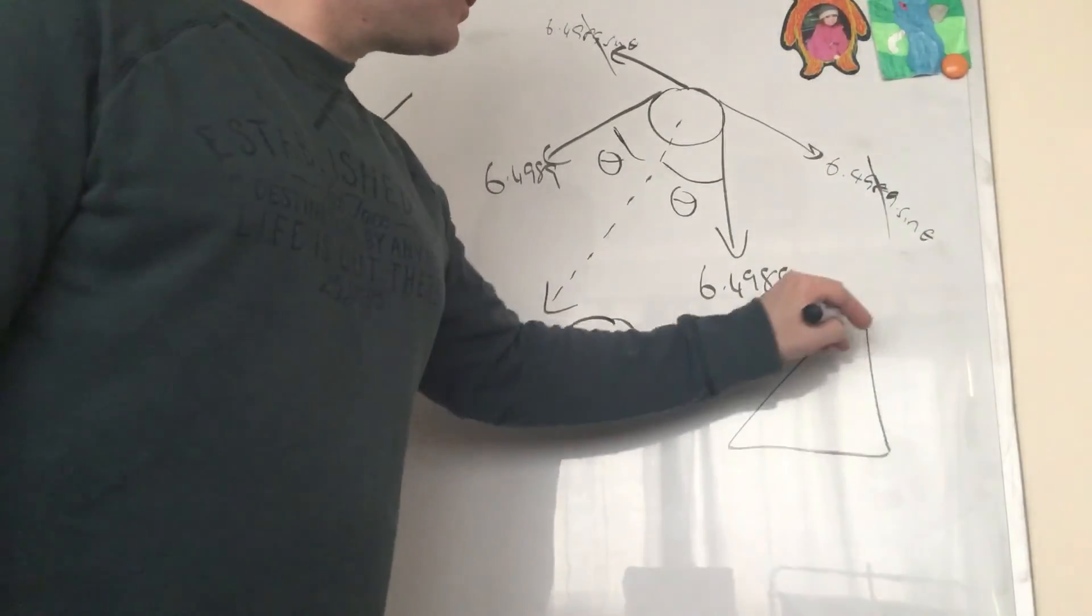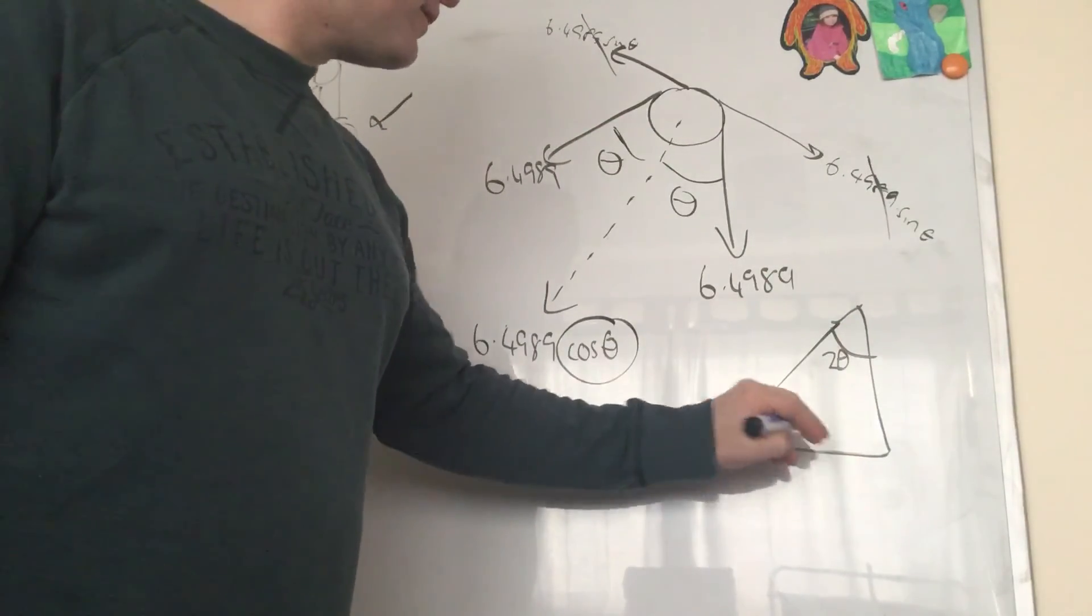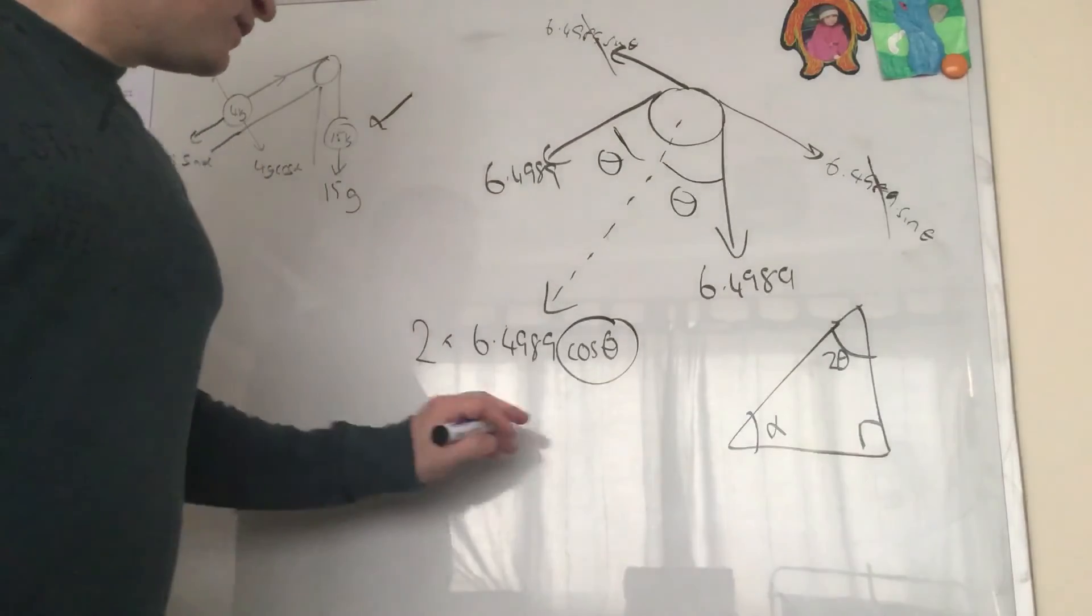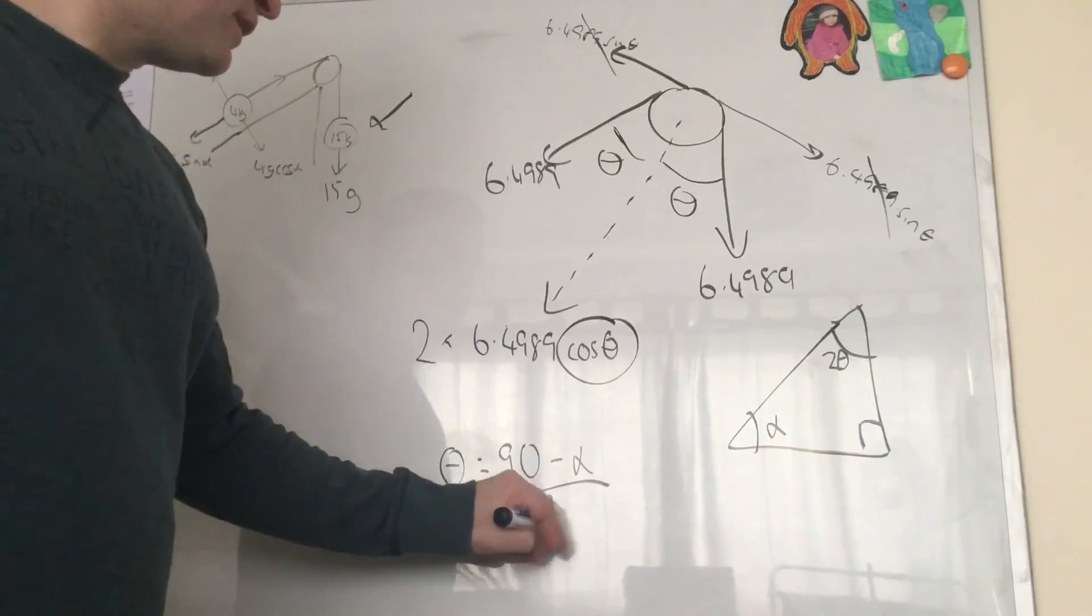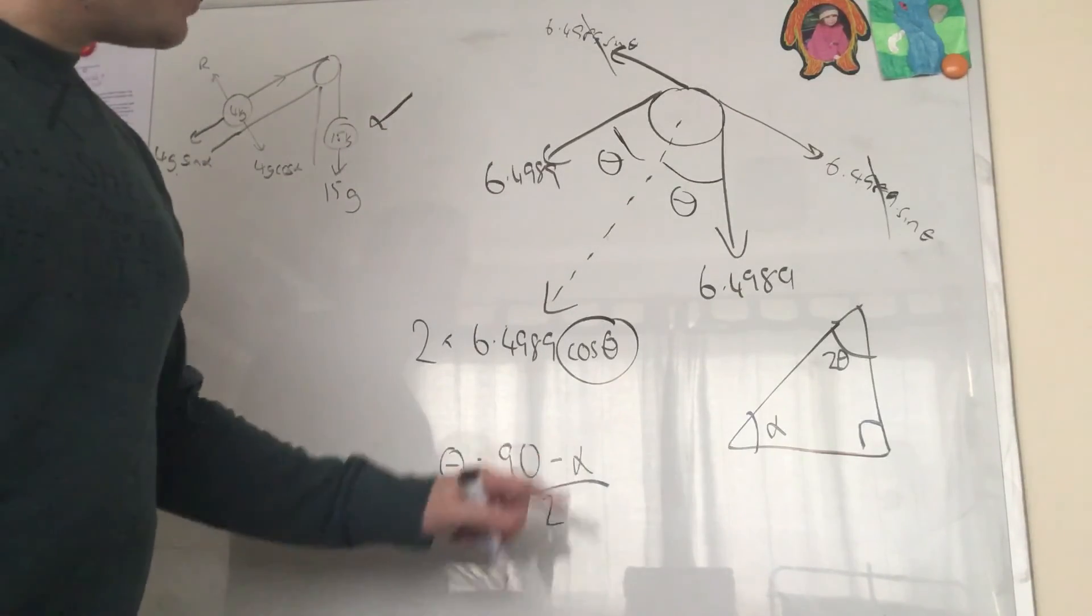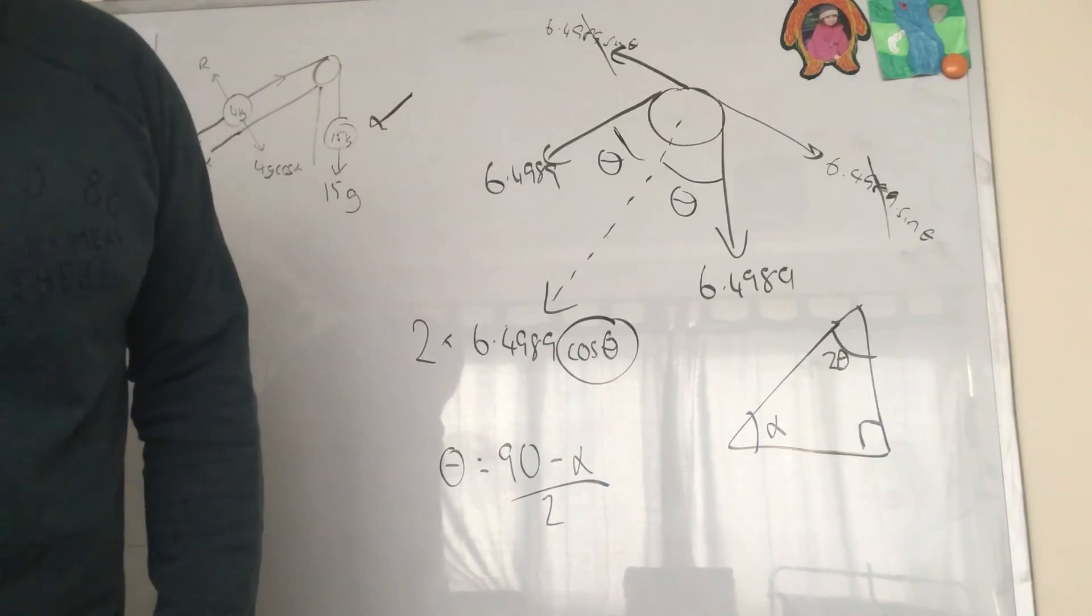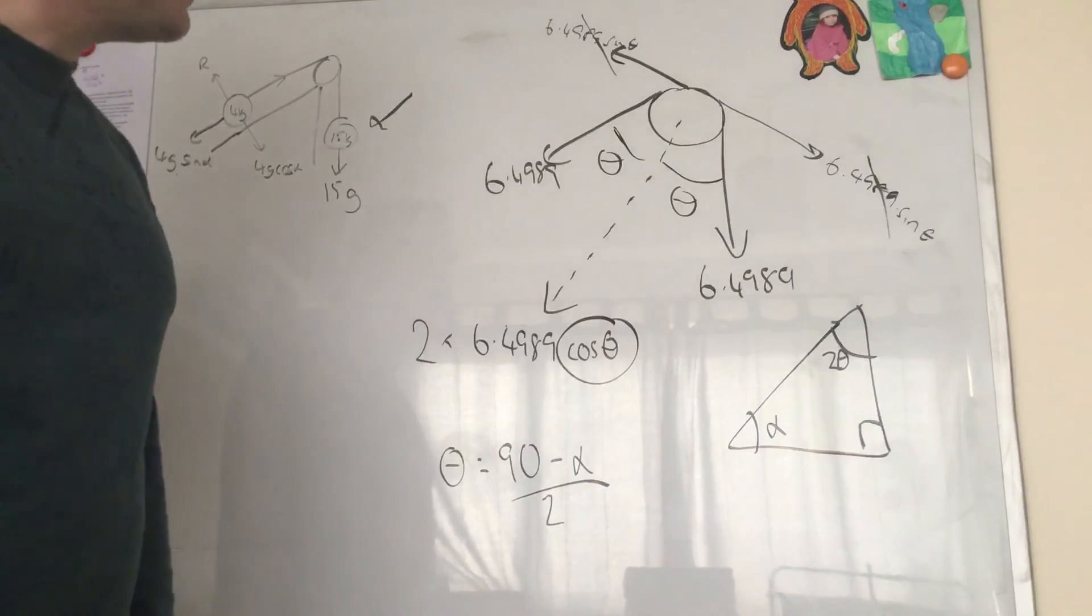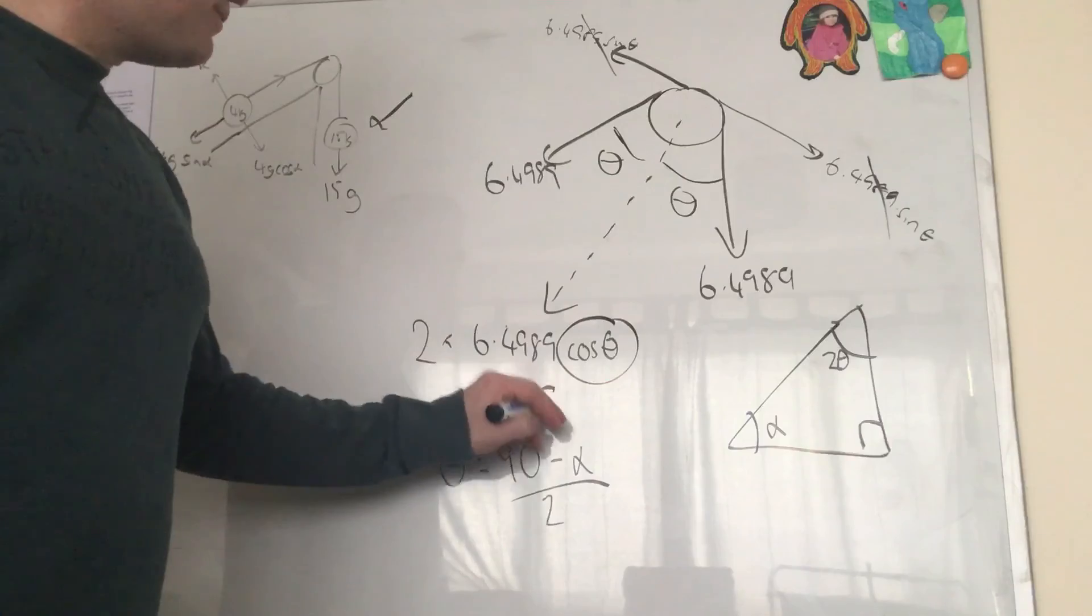So we look at our triangle, that angle there is 2 theta. There's our alpha, right angle triangle. So we get theta equals 90 minus alpha divided by 2. And to get alpha, just get your calculator and do inverse sine of 0.6. 90 minus that divided by 2, and that gives us an angle of theta, which is whatever it is. I went through it last time, so you can probably work it out, it's fine.